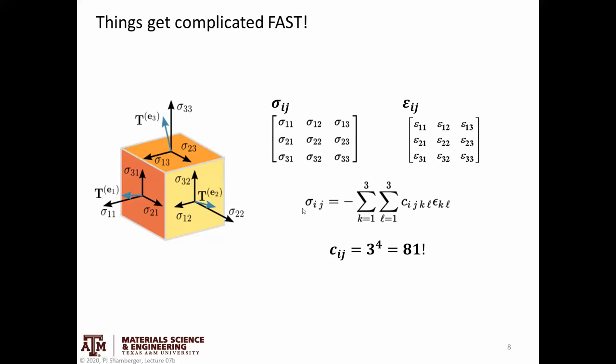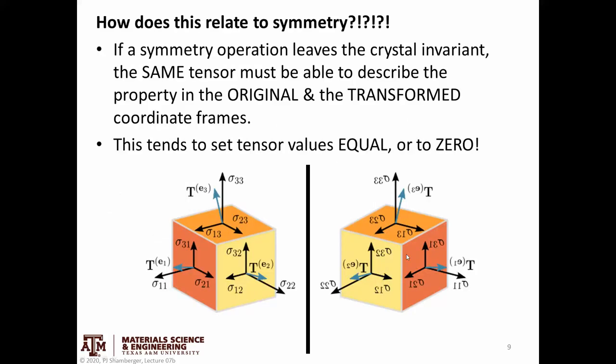So again, if I was talking about conductivity, this only has nine elements. But stiffness or compliance matrix, these are fourth-rank tensors. They have 81 different elements. So it's pretty complicated pretty quickly.